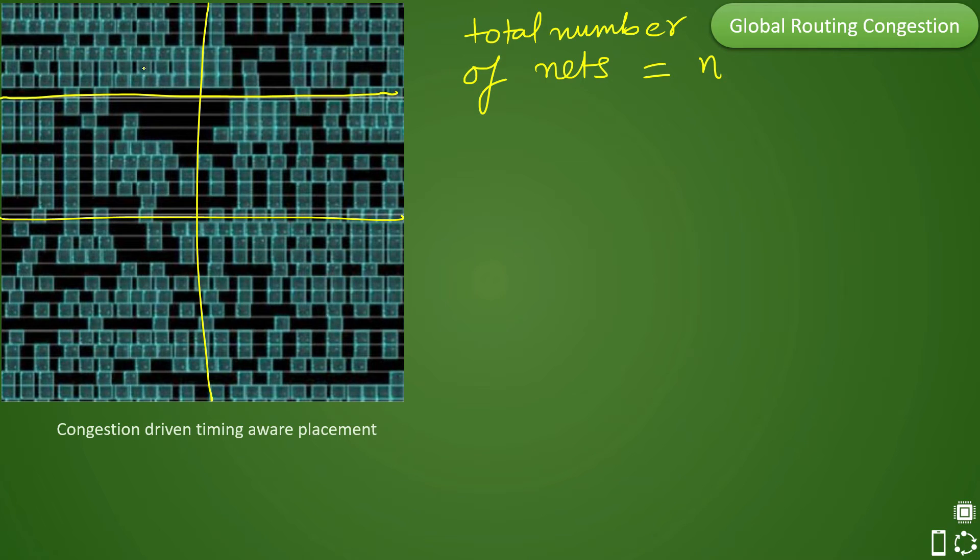And now it will see how many metal layers are there and based on each metal layer. So let's say if you have six metal layers, in this case, what will happen is you will have horizontal three and vertical three layers. Let us assume that your M1 is horizontal. So your M2 will be vertical and then M3 will be horizontal. M4 will be vertical and M5 will be horizontal and M6 will be vertical. These are your horizontal metal layers and these will be vertical metal layers.